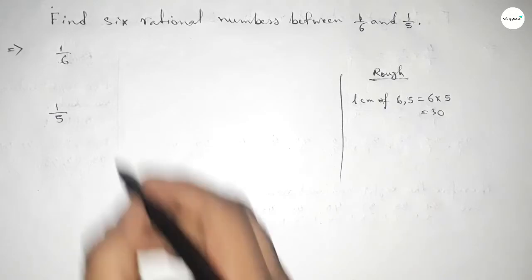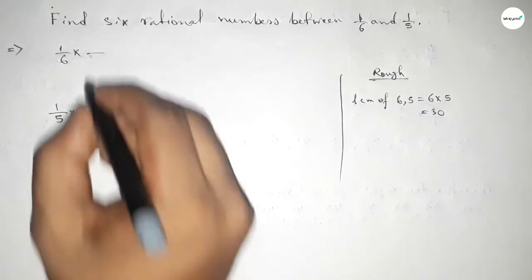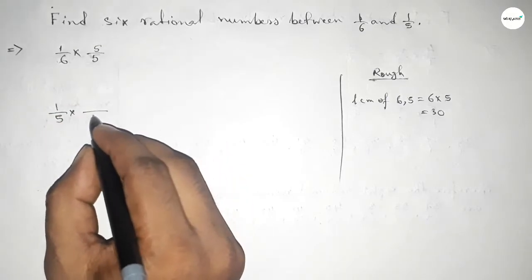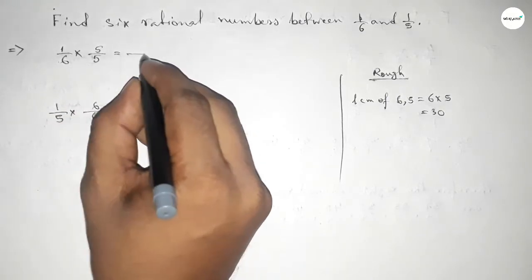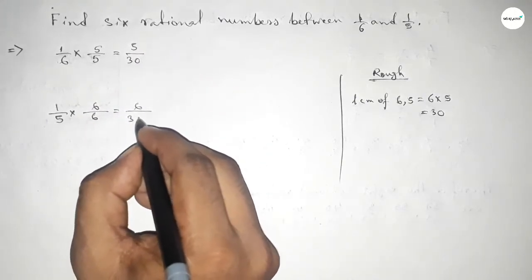We bring both denominators to 30. Multiplying by 5 and 6 respectively, we get 5/30 and 6/30.